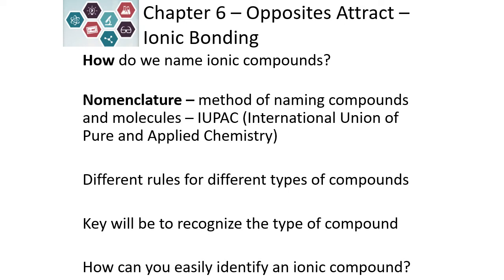So when we're naming ionic compounds, we need to know it's ionic. And the way that we do that is it has a metal in it. So ionic compounds have metals. If it's a covalent compound, it's all nonmetals.